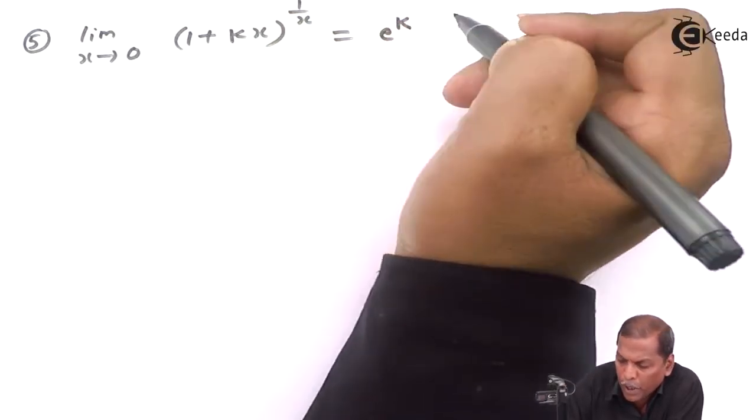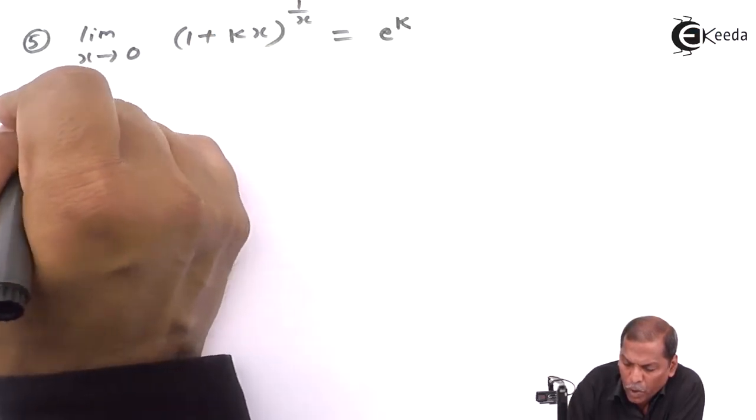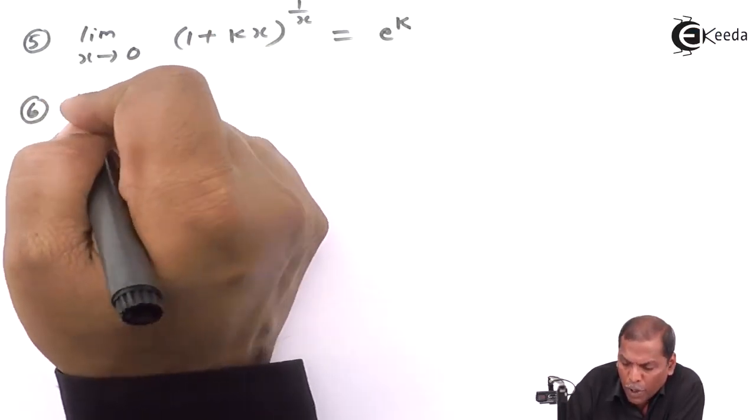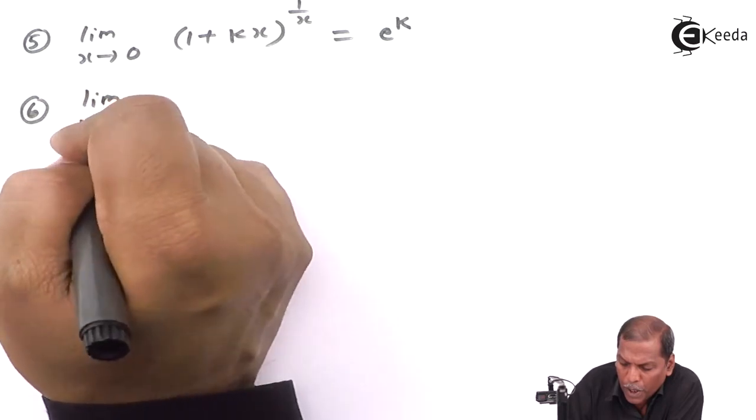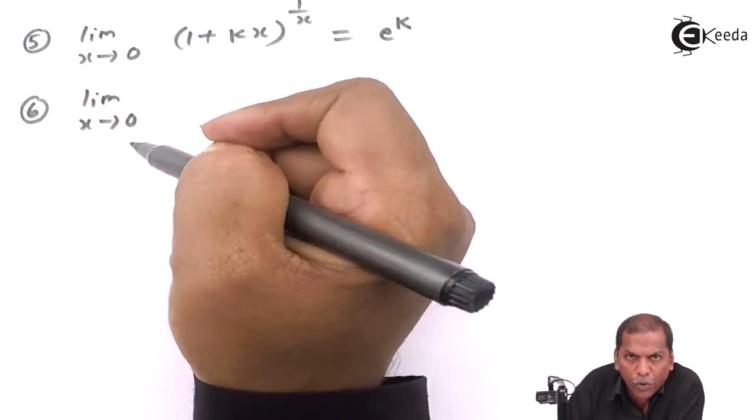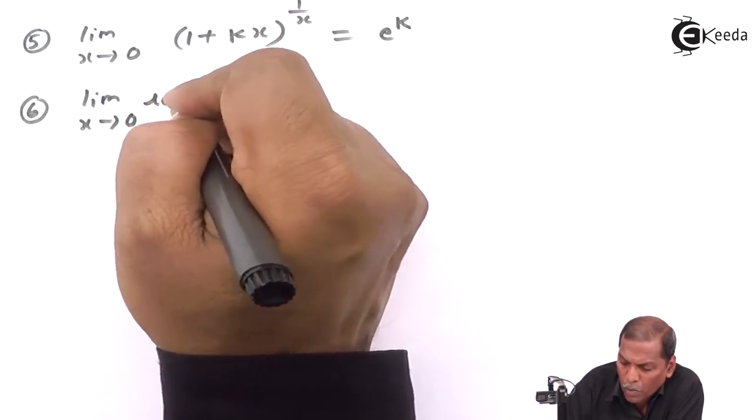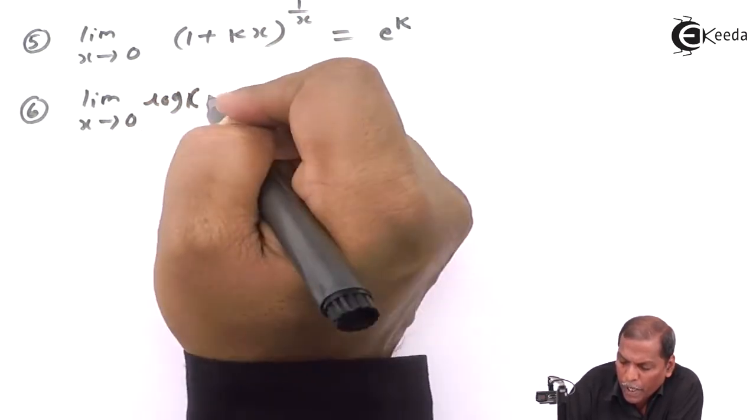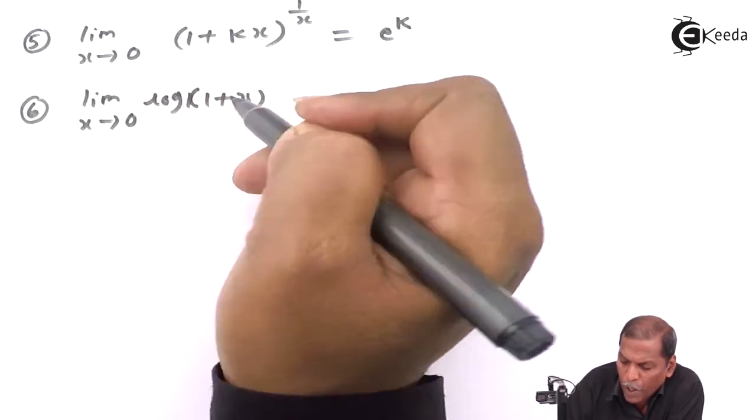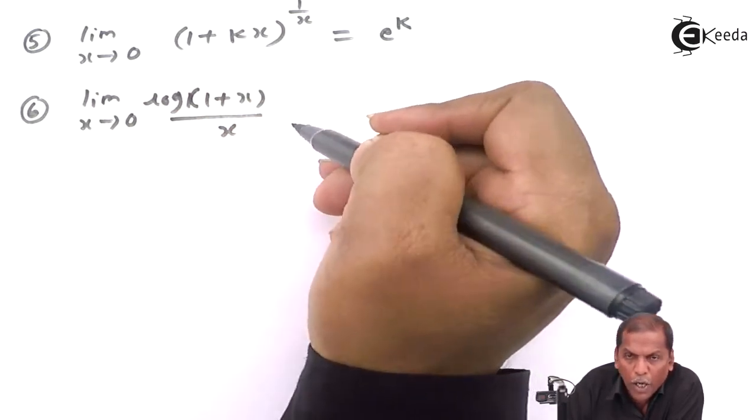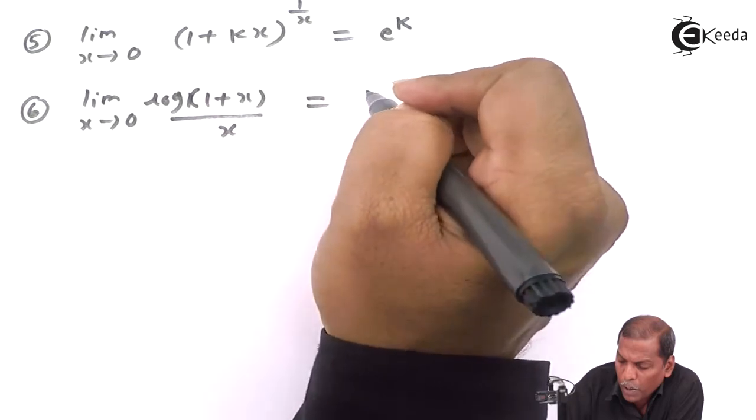And result number six is: limit as x approaches zero of log(1 + x)/x equals one.